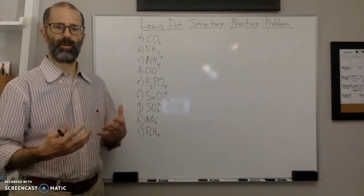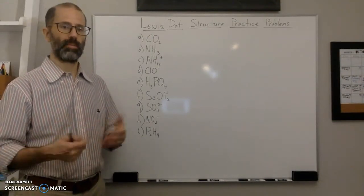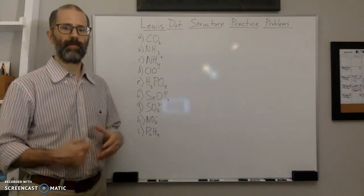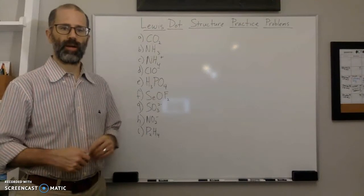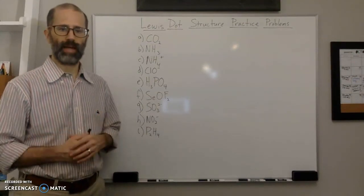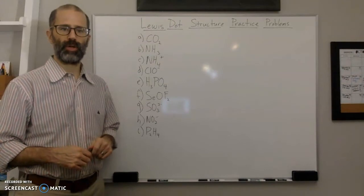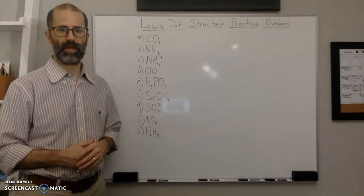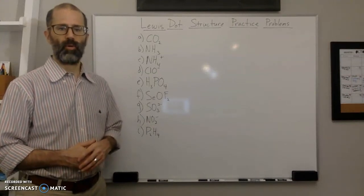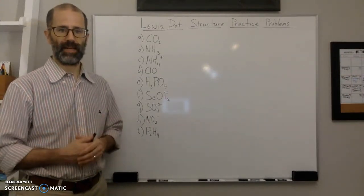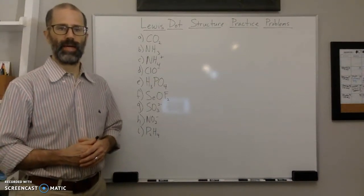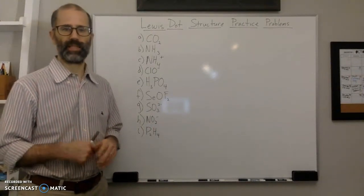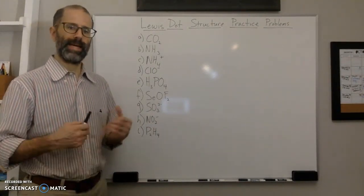One of the things I'm going to say — and I've said it before — is there are going to be Lewis dot structures where they don't follow the octet rule. You're going to have structures where you have what is called an expanded octet, where you have more than eight electrons around your atom, or you might have less than eight electrons around your atom, and it'll be okay. Those are exceptions to the rule, and I will deal with those in later videos.